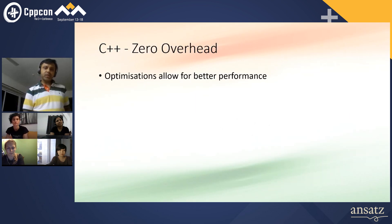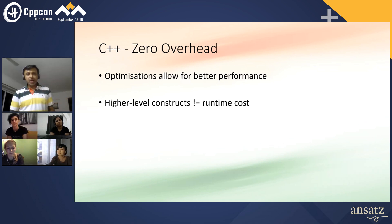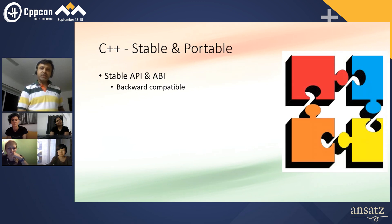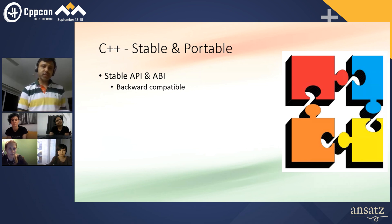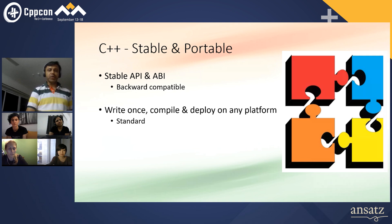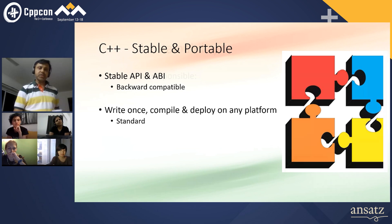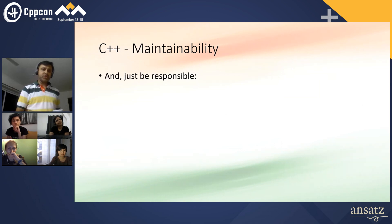Zero overhead — of course this is your best friend. Optimizations allow for better performance; high-level constructs don't come in the way and don't translate into runtime cost as far as possible. A stable and portable API makes sure that code runs for a very long time — your large system can get larger and you don't have to worry. Write once, compile and deploy on any OS; it's standard, just stay with the standard.